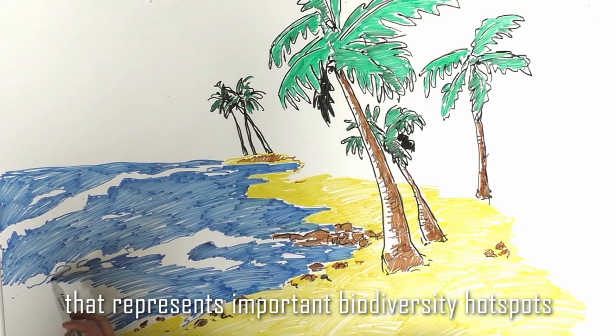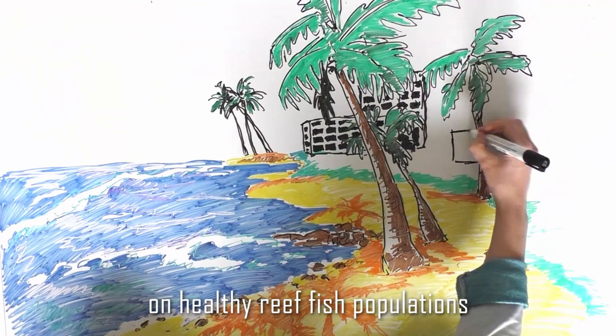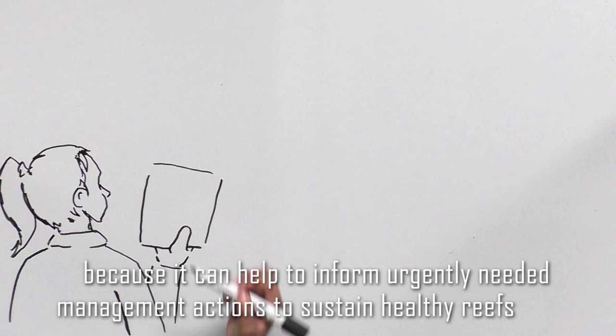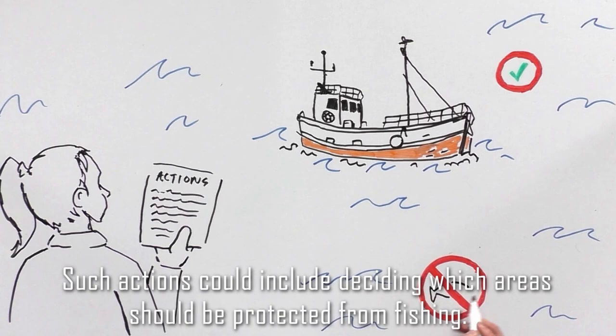Mapping and identifying habitat that represents important biodiversity hotspots is important for coastal communities that rely on healthy reef fish populations for food, tourism and culture because it can help to inform urgently needed management actions to sustain healthy reefs and healthy coastal communities.